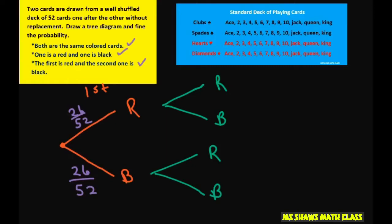So if we draw red the first time, this is your second time, you're only going to have 25 red left, and the total number of cards is 51.